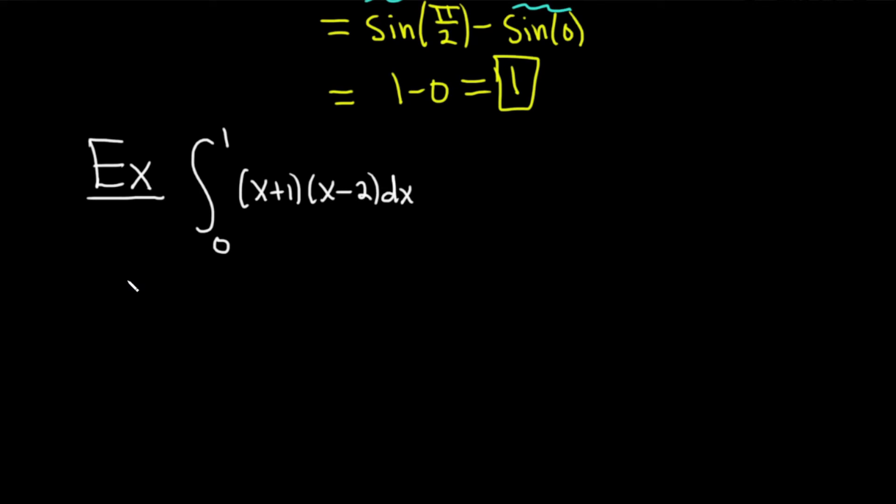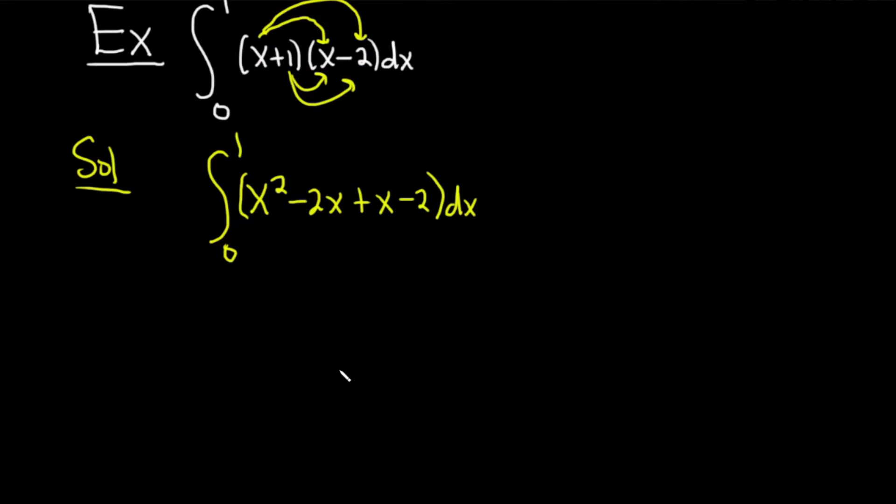This is going to be the definite integral from 0 to 1. So x times x is x². And then x times -2 is going to be -2x. And 1 times x is x. And then 1 times -2 is -2. Parentheses, and we have our dx. Remember, it's always really important to write down the integral sign until you actually integrate.